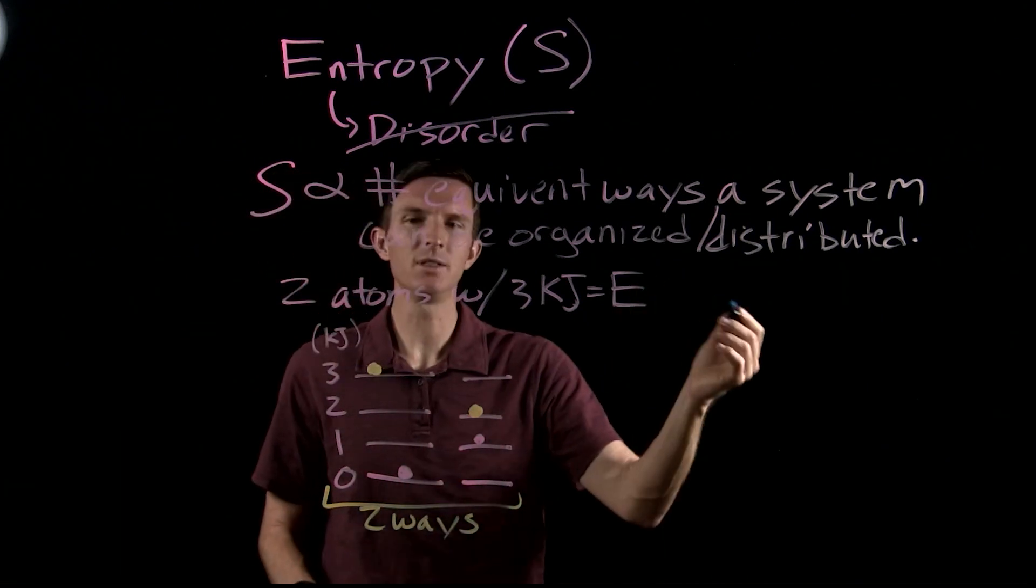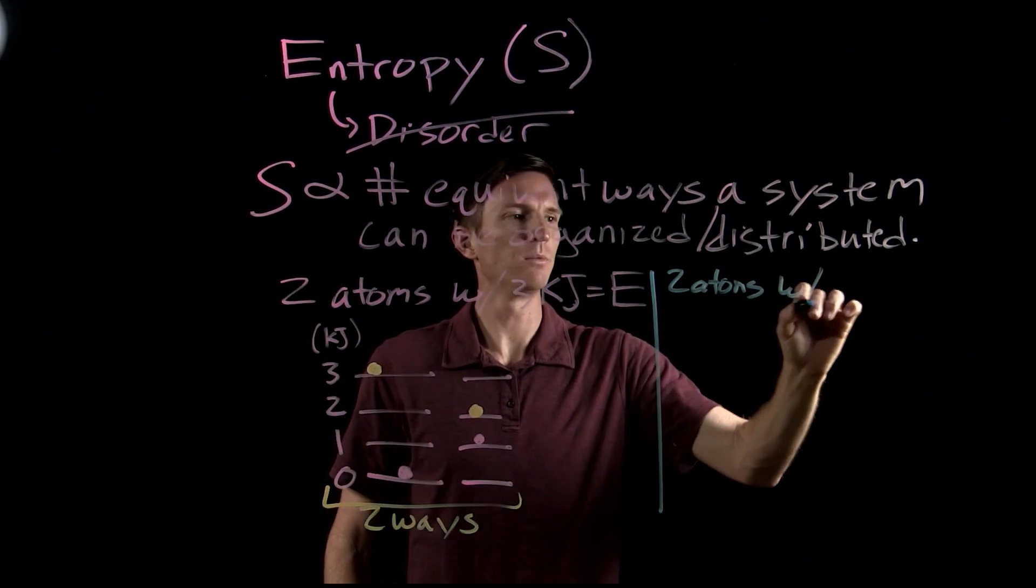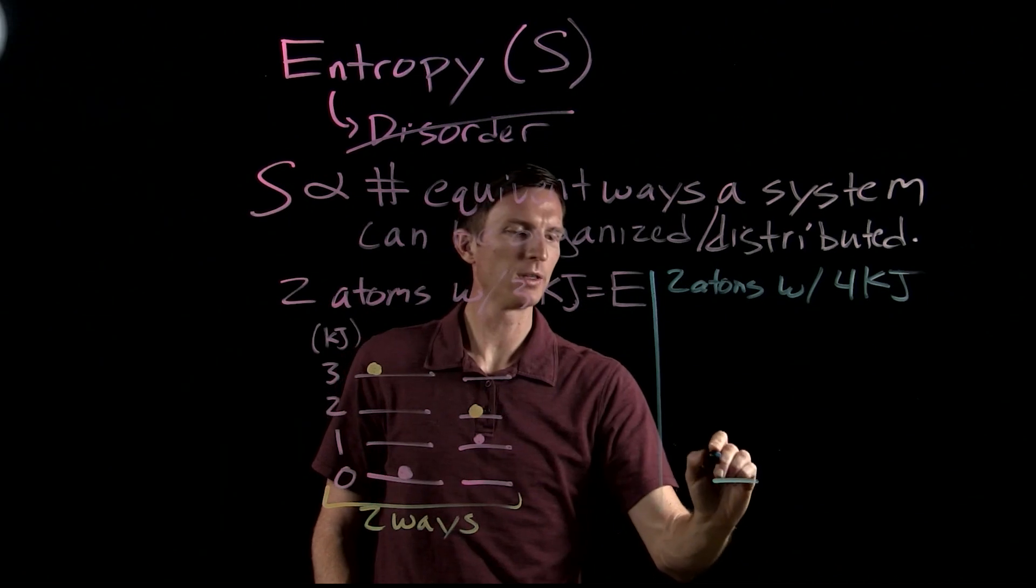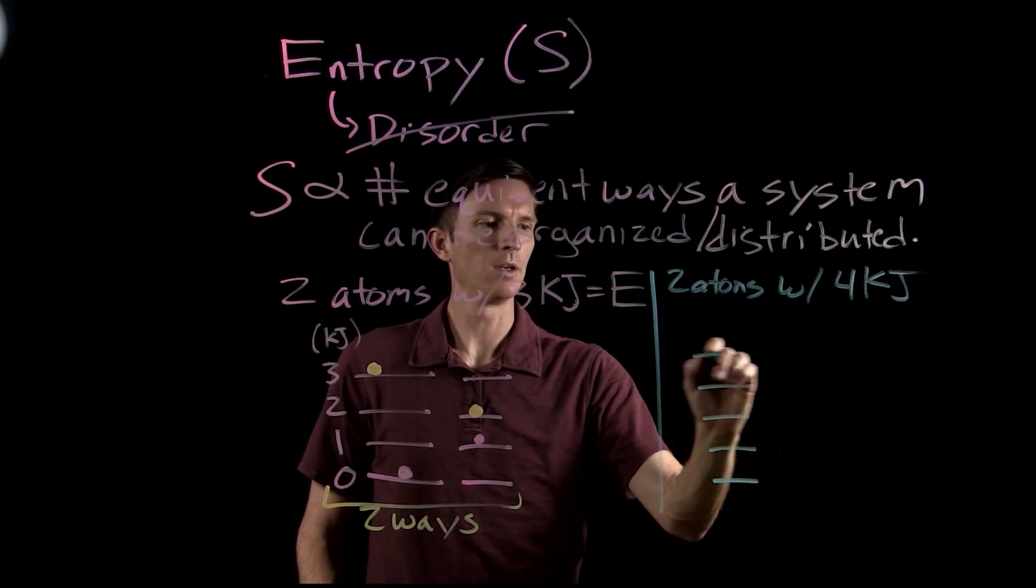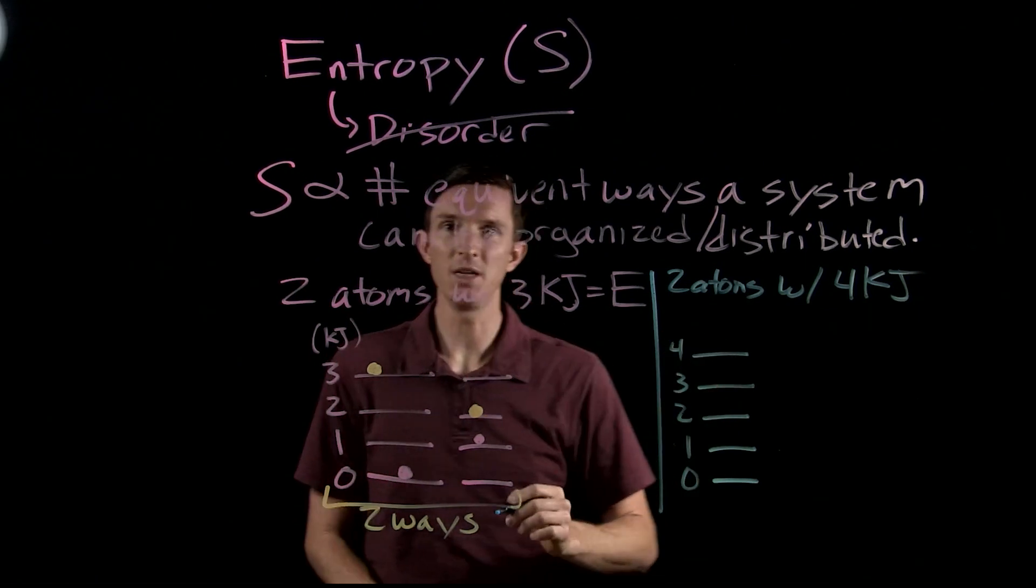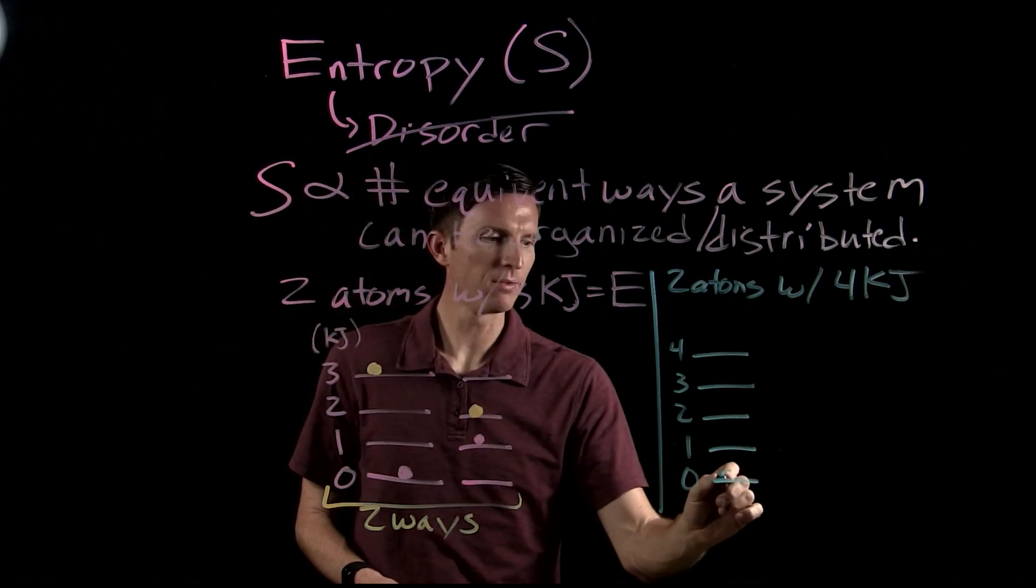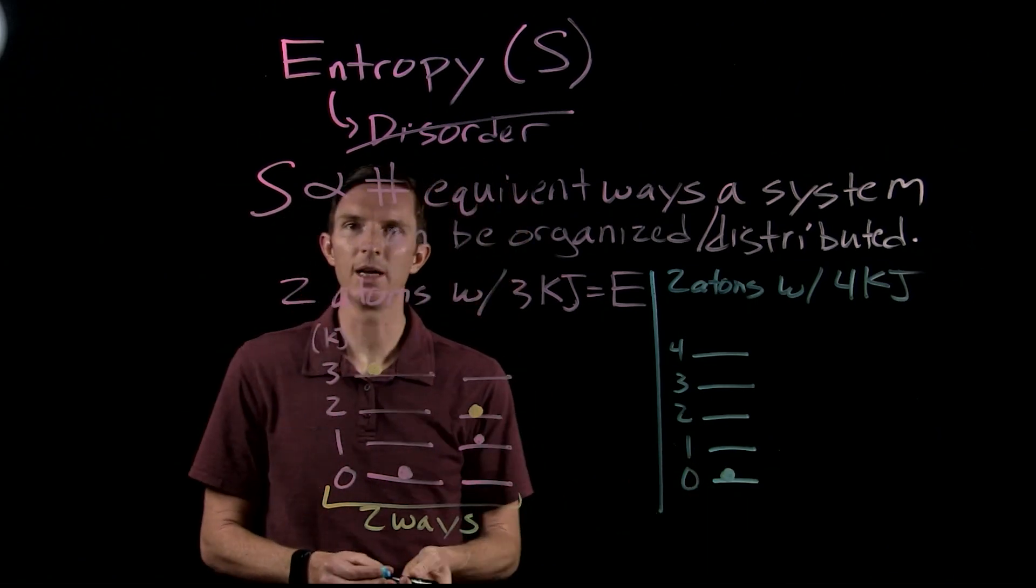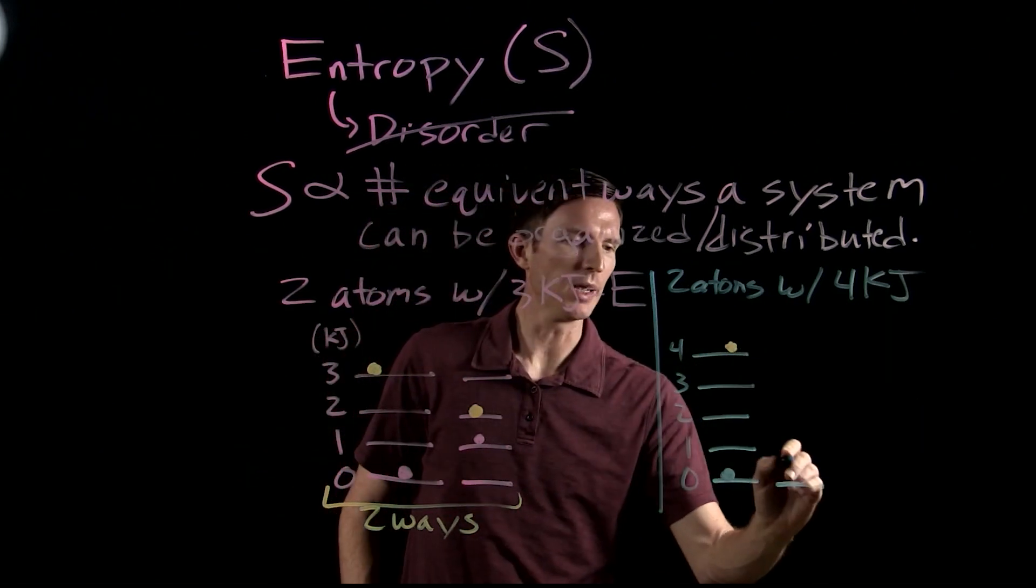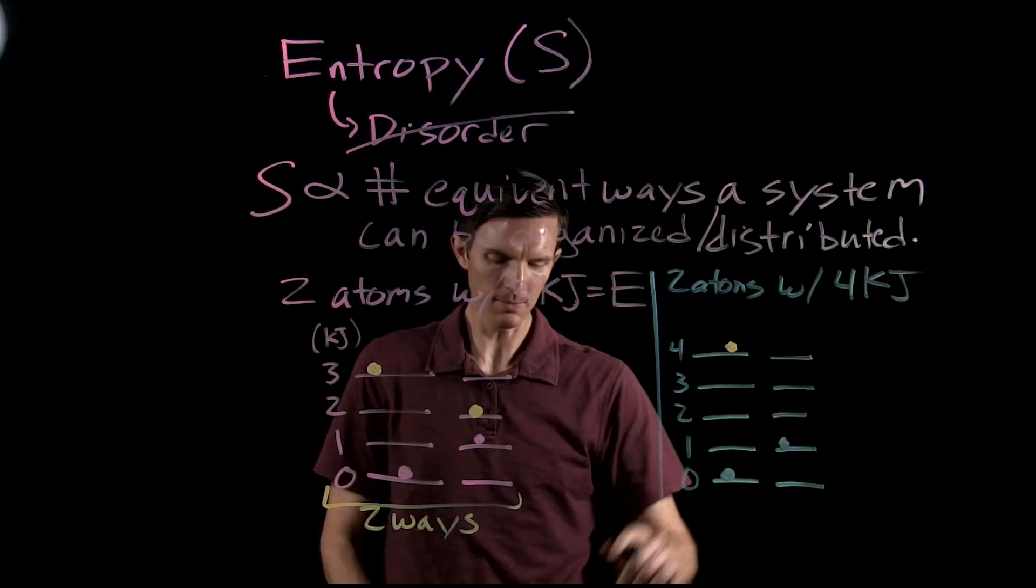Now what happens if we have instead two atoms with a total energy of four kilojoules? So again, we're going to do individual one kilojoule energy gaps that they can exist at. They're quantized there. So again, we can have one of them sitting at zero and another one sitting at four for a total of four. We can also see that we can distribute one and three.